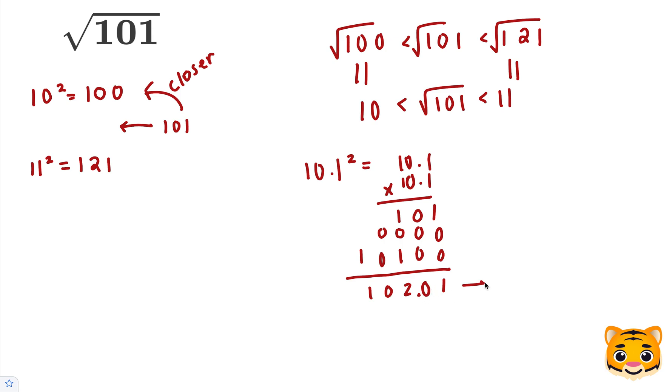So this is 1.01 away from 101. However, if we do 10.0 squared or just 10 squared, we get 100, which is just 1 away. We can see that 10 squared gives us a closer approximation than 10.1 squared.